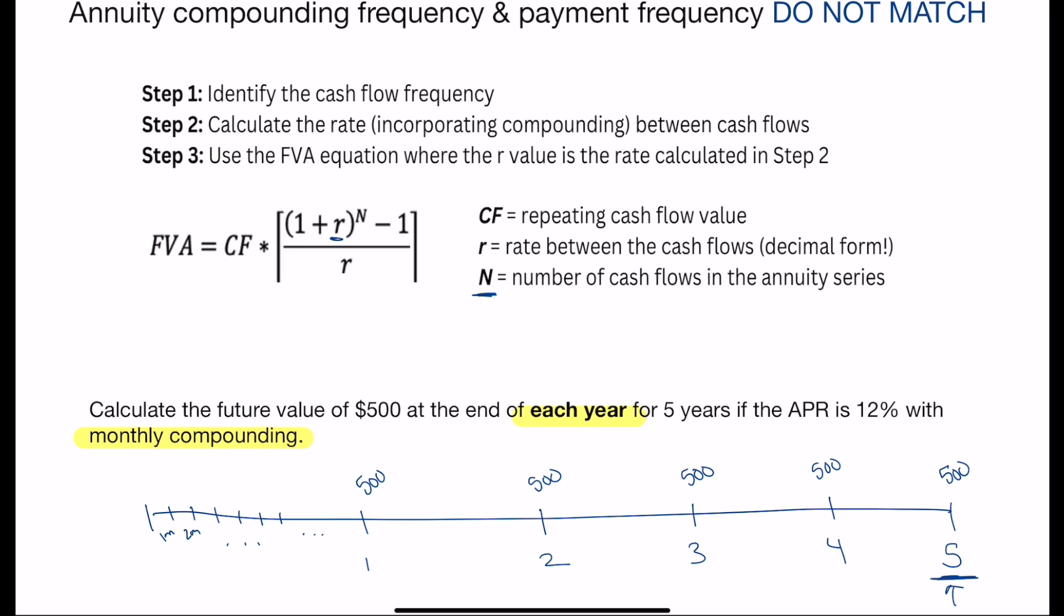First, identifying the cash flow frequency. So the cash flow frequency here is annual, or yearly. So what we're going to need to do is we need to calculate the rate that incorporates in compounding each year.